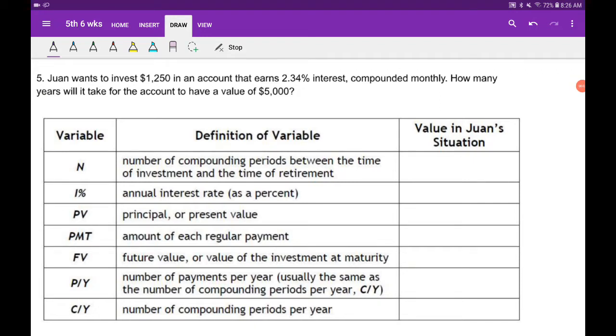Alright, so this one's going to be a little bit interesting and tricky. Juan wants to invest $1,250 into an account that earns 2.34% interest compounded monthly. How many years will it take for the account to have a value of $5,000?